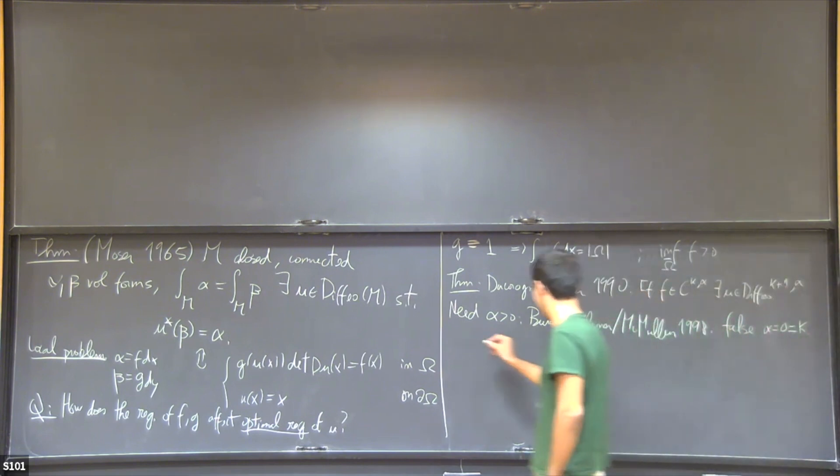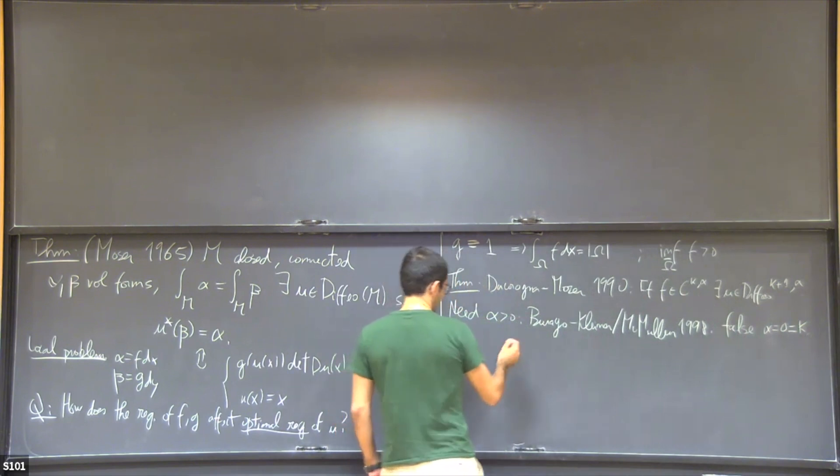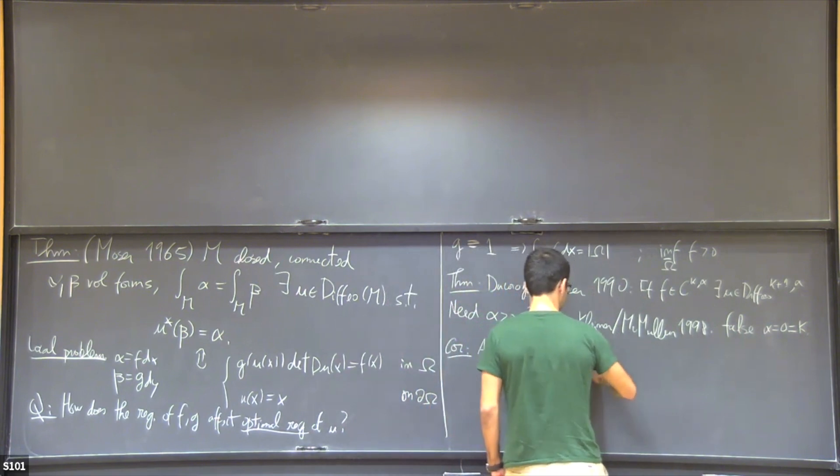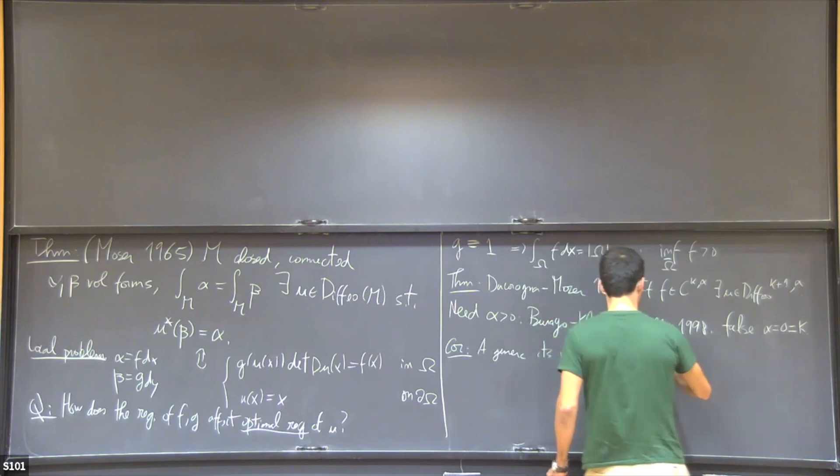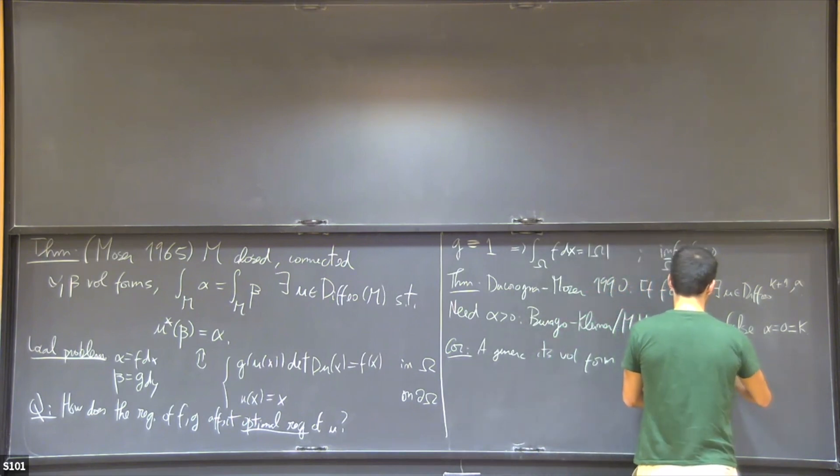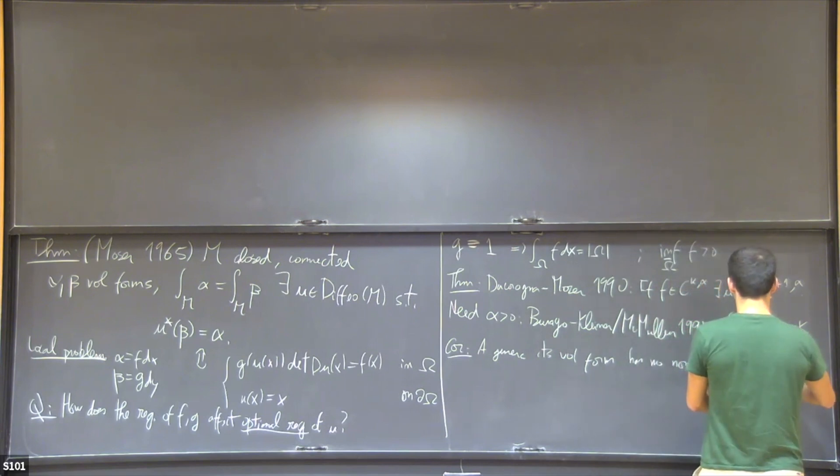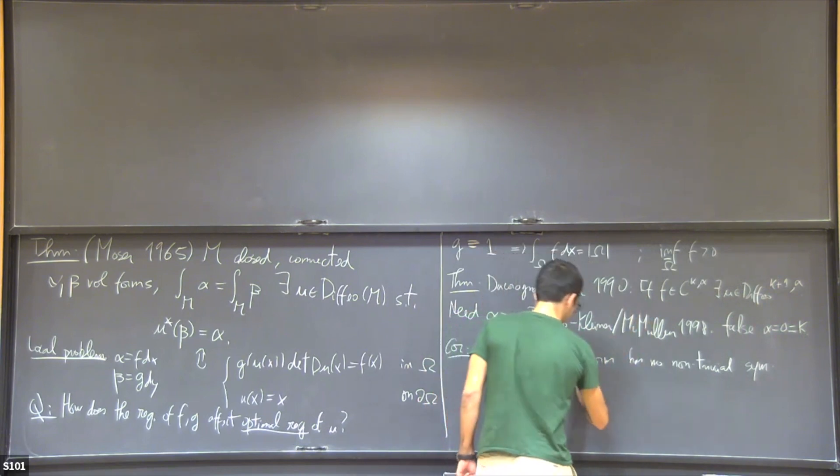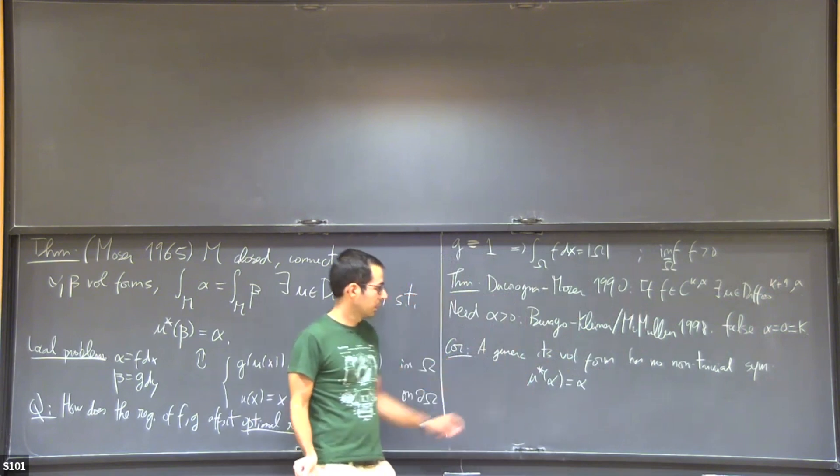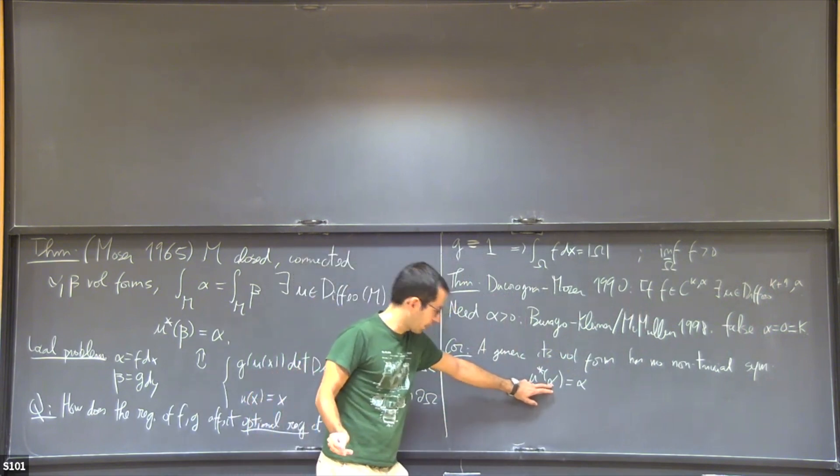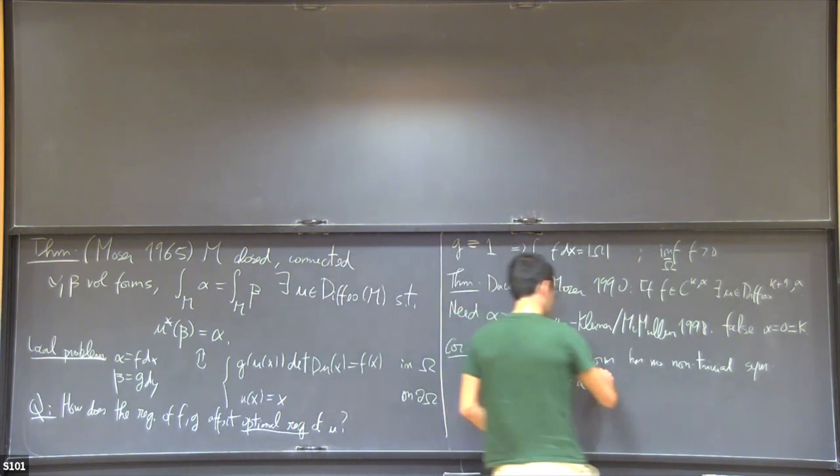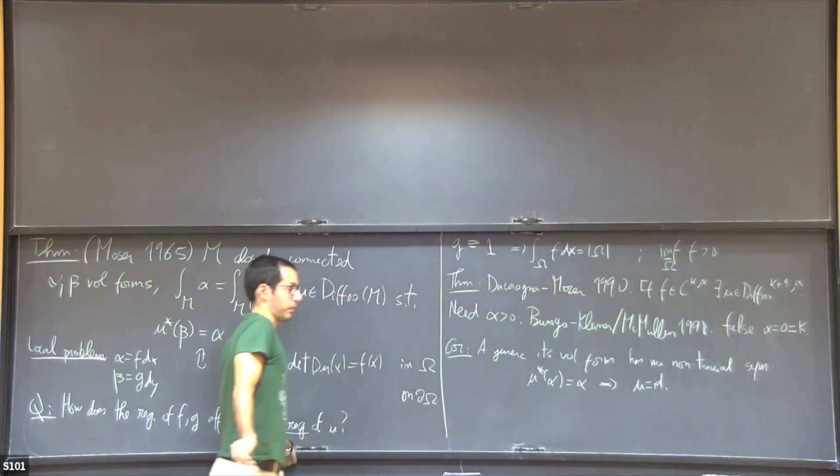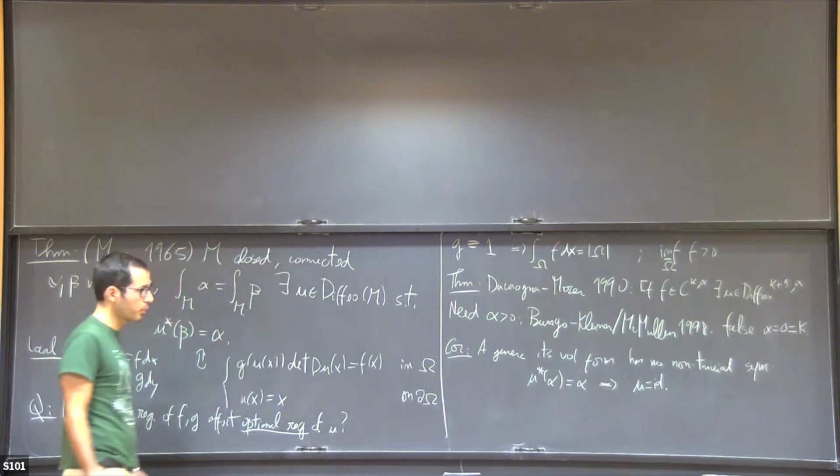If you want an amusing corollary of their theorem, it's that a generic continuous volume form has no non-trivial symmetries. What I mean by this is the following: if the pullback of omega through U is omega, so this would be a symmetry, then U has to be the identity. This is true for a generic continuous volume form. Continuous volume forms are very different from smooth volume forms.